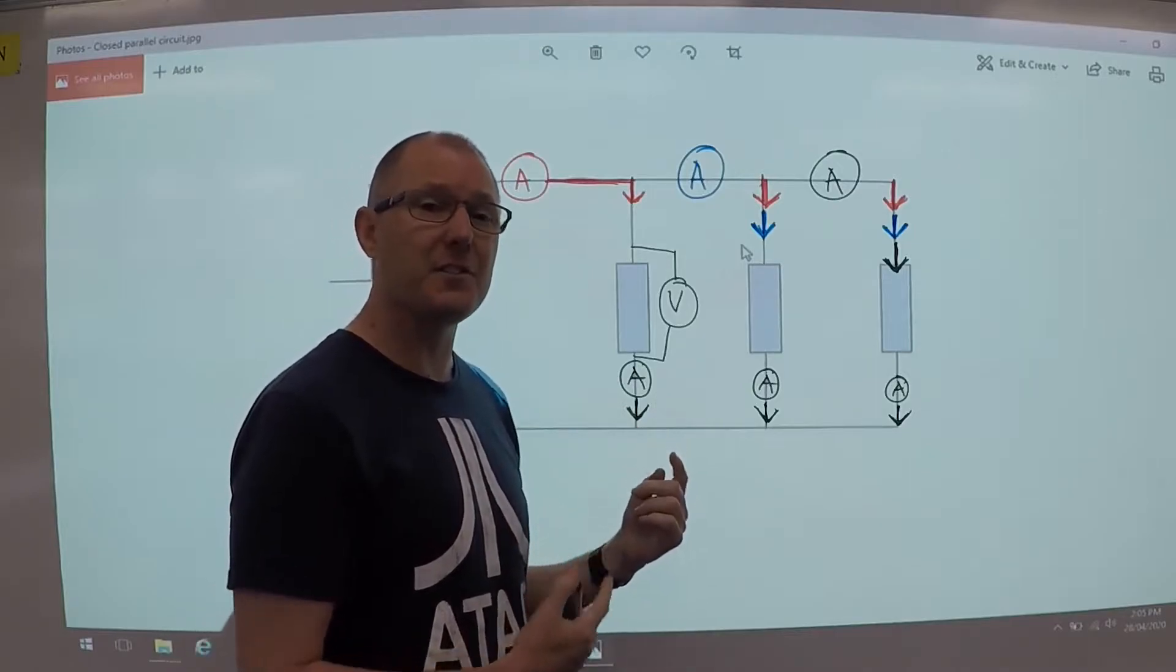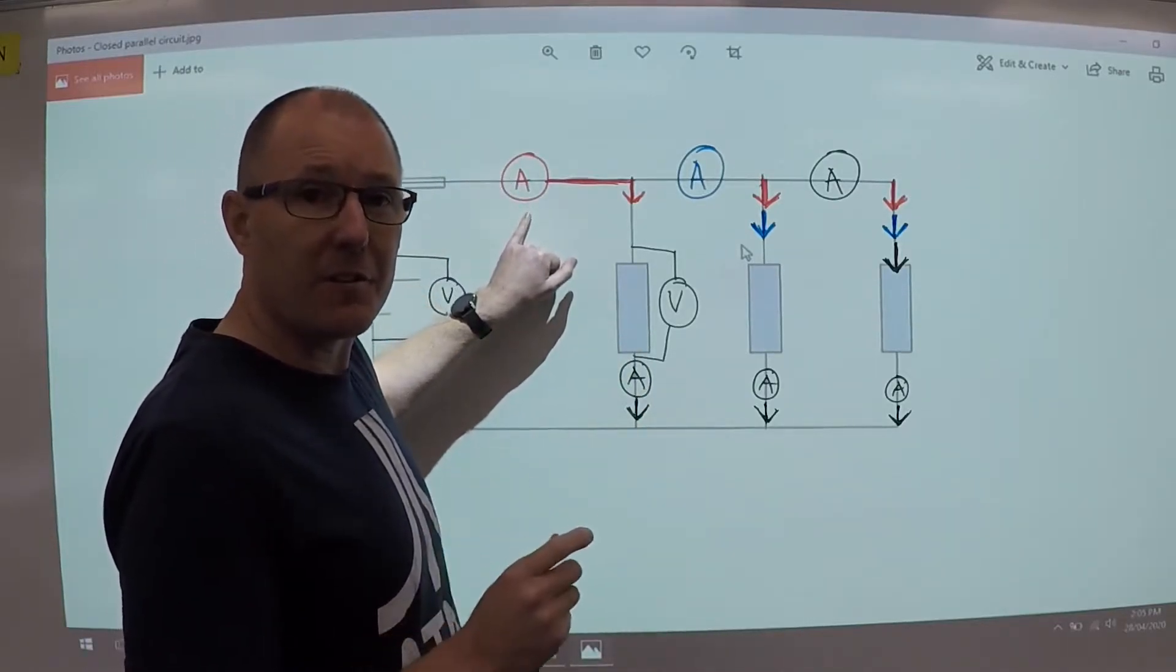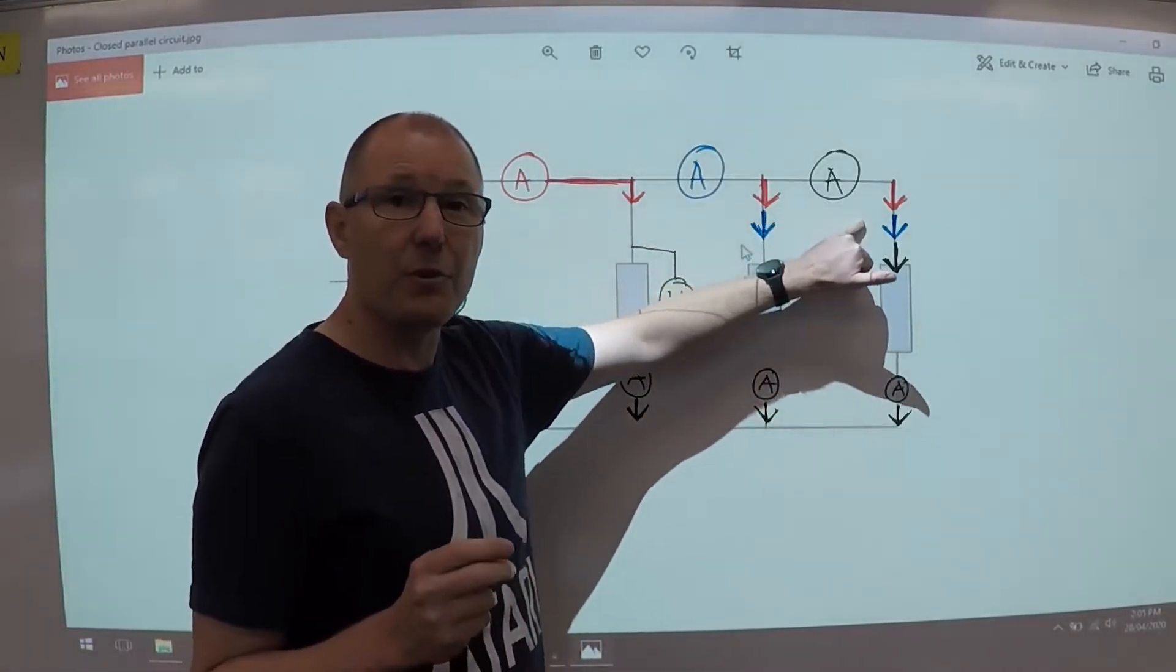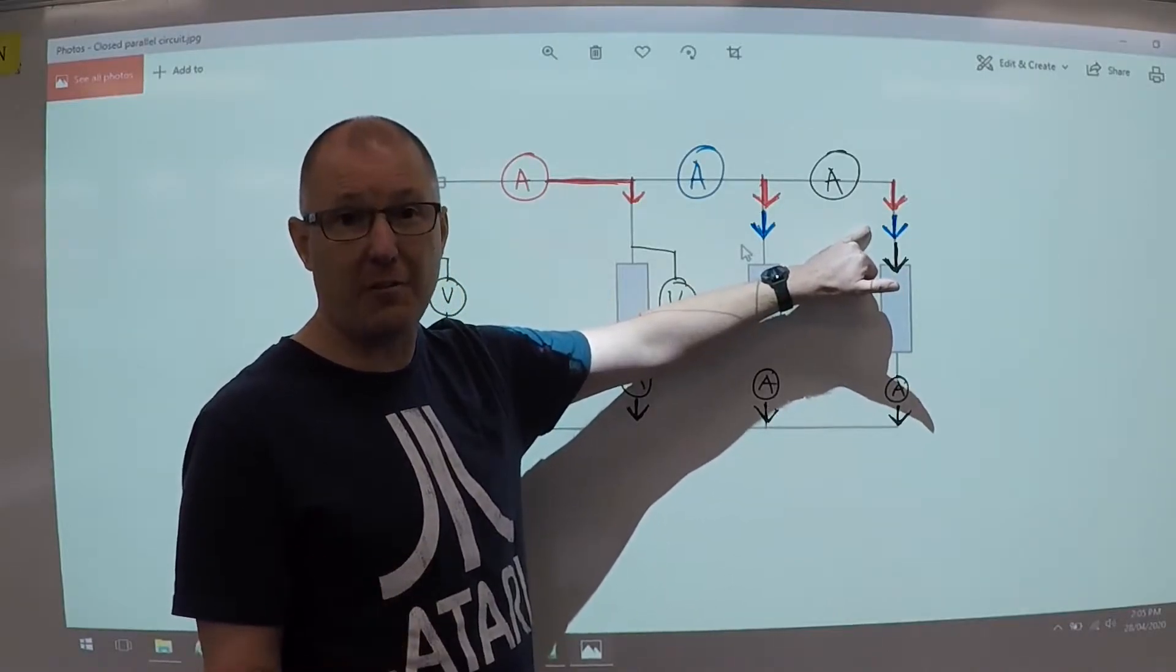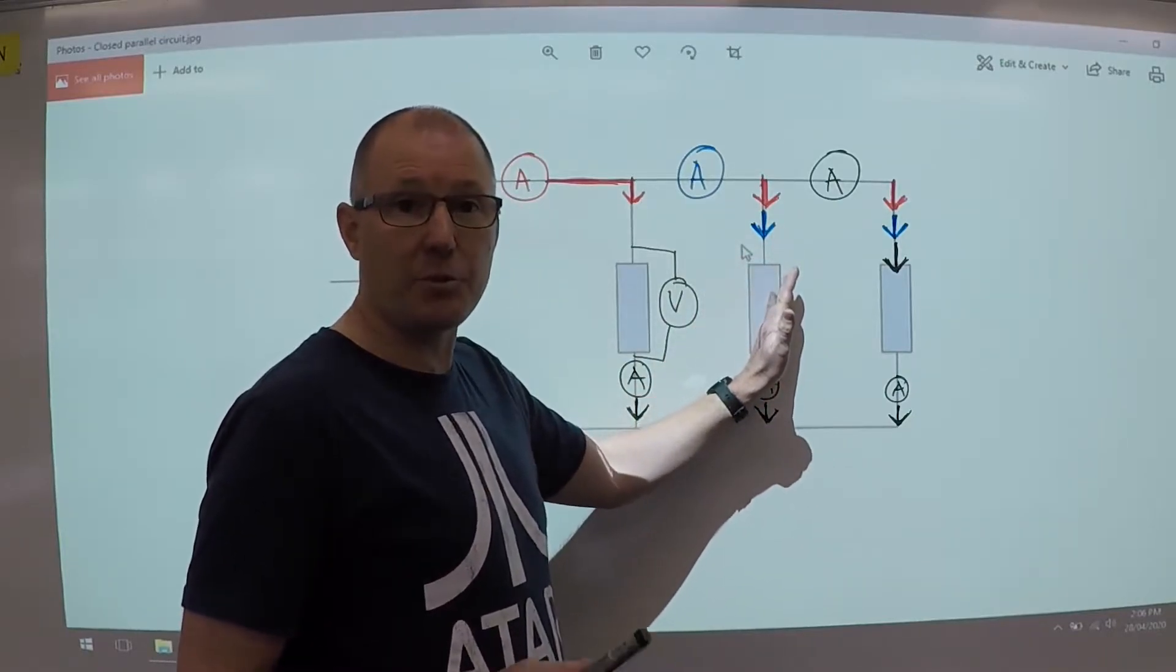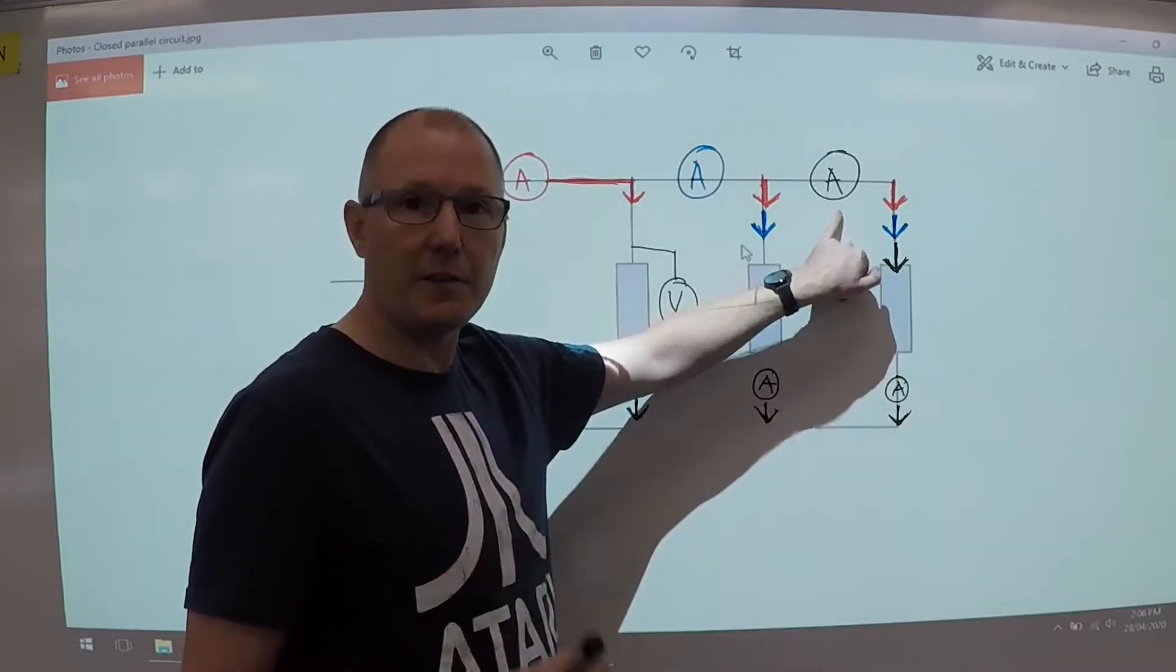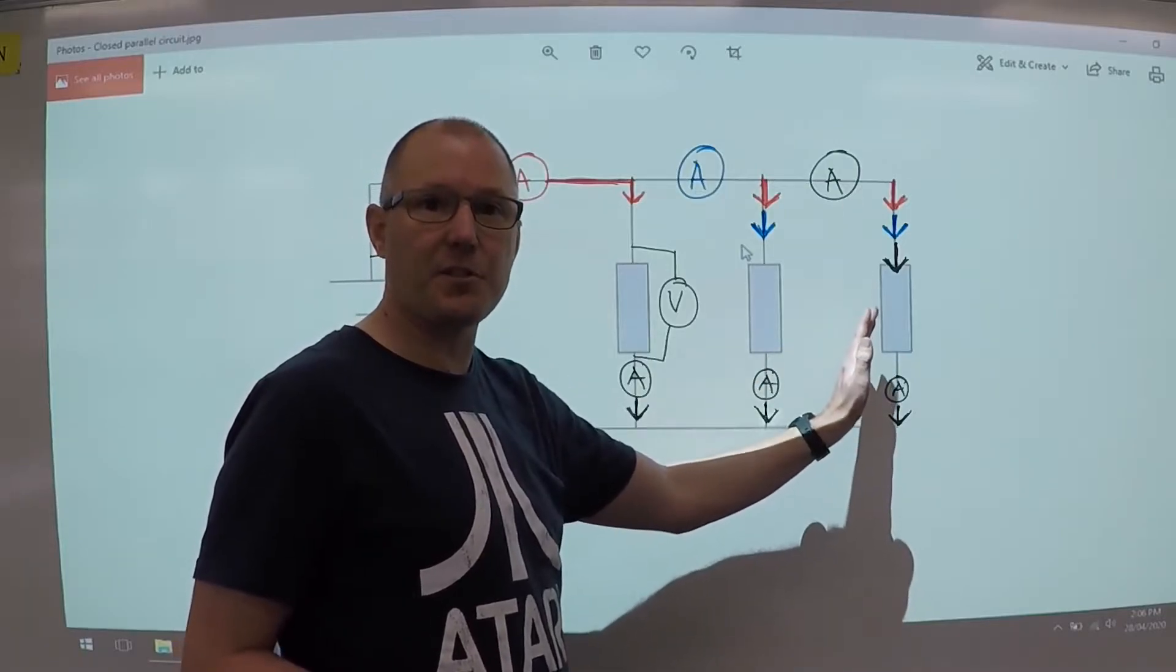So let's have a look at this example. An ammeter at the very start of the circuit will measure the current flowing through all three paths of the circuit, so the total current. The blue meter is going to measure the current being drawn from the next two resistors. And the black ammeter is going to measure the current in that last resistor only.